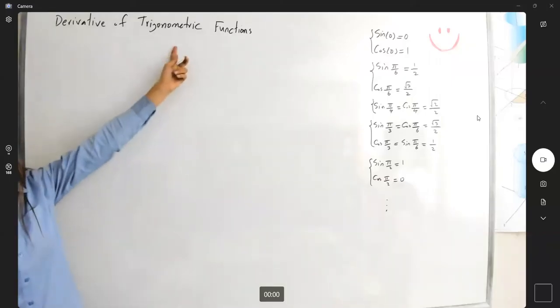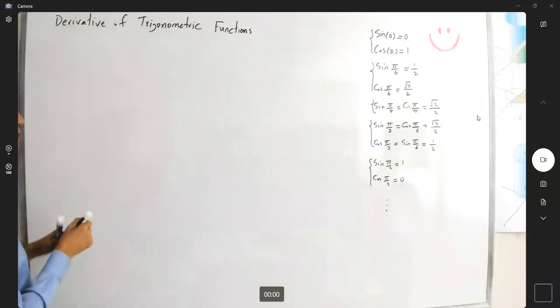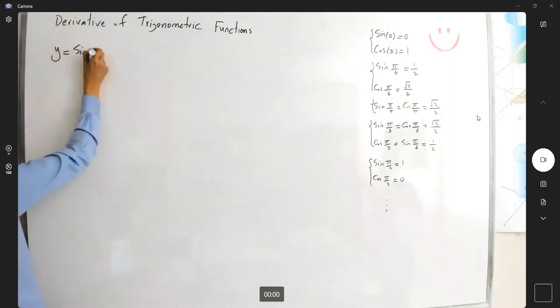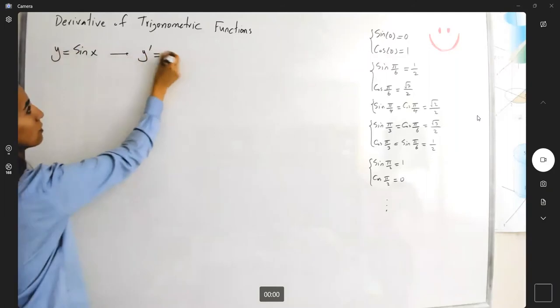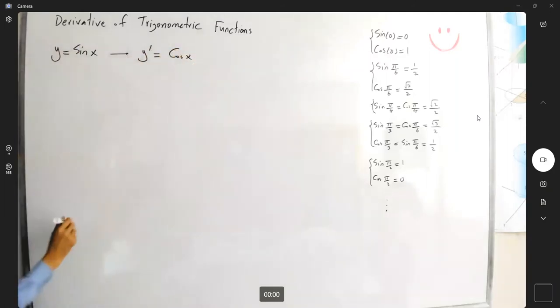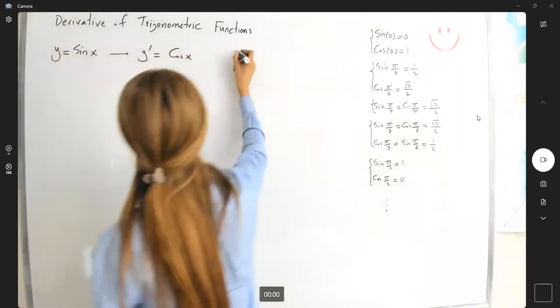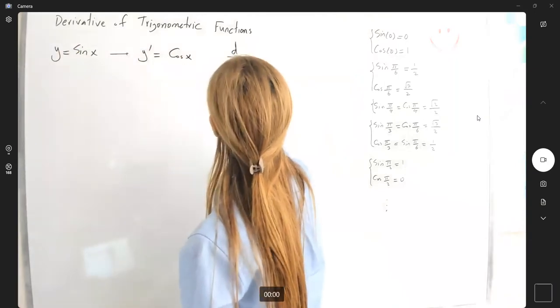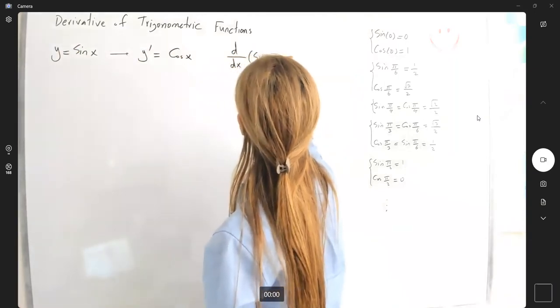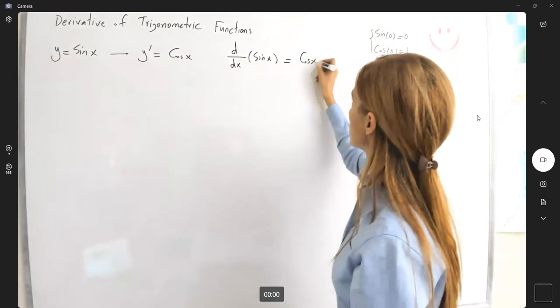Let's take a look at the derivative of trig functions. If y is equal to sine of x, then the derivative is cosine of x. Or you can write d/dx of sine x is cosine of x.